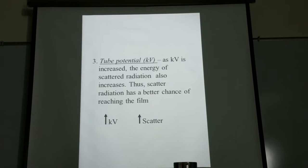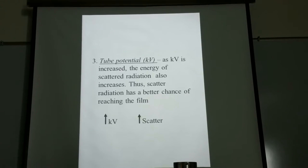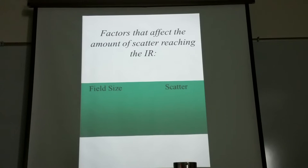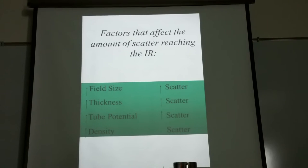Even radiolucent areas like air will produce very little scatter, but it still occurs because x-rays must interact with something. Third, higher kV produces higher energy scatter radiation, which interacts with both the patient and radiographic film. We need to find a happy medium — we want penetration and attenuation, but not too much of either. Fourth, the density and composition of the material being x-rayed also influences scattered radiation reaching the image receptor.